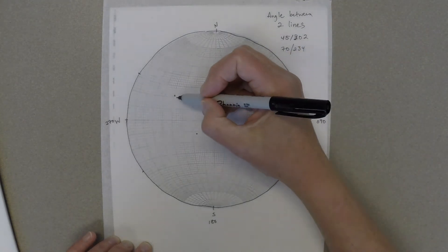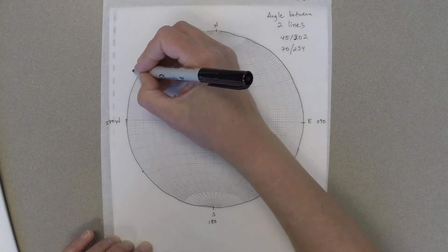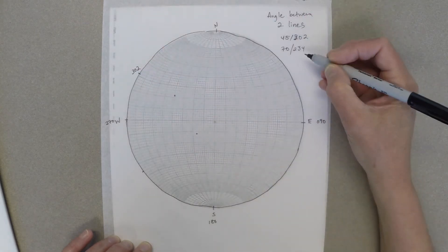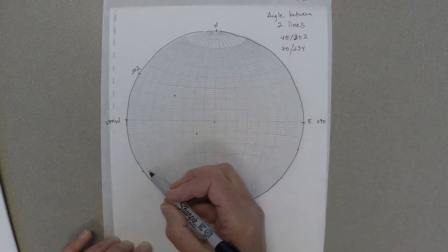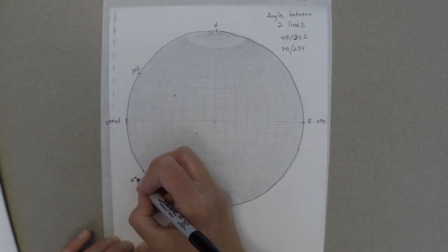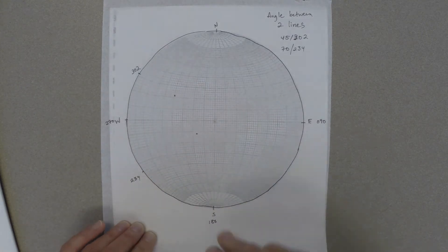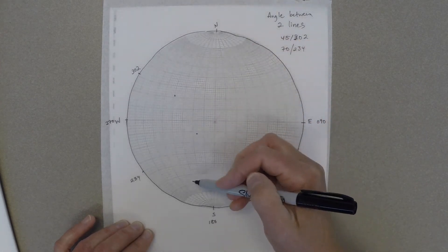First thing you need is two dots plotted to represent those two lines. We've got one line that has a trend of 302 degrees and a plunge of 45, and the second line represented by a dot that has a trend of 234 degrees and a plunge of 70.